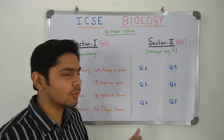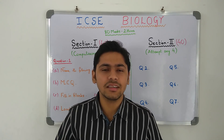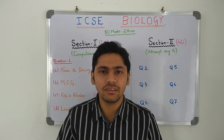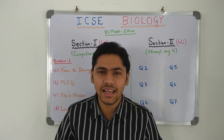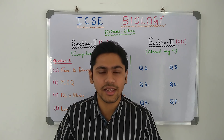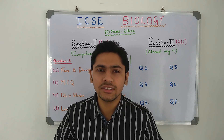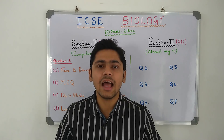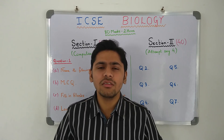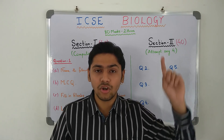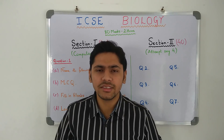That was all regarding the pattern and what type of questions come. For preparation, you have to study pretty much everything, like all the other science subjects. If you want to score 80, solve a lot of questions based on diagrams. We have already solved the ICSC 2018 biology question paper — the link will be in the top right corner. Do watch that and you will understand what type of questions are asked.